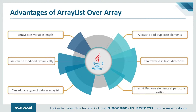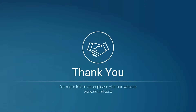Now let's jump into the last topic: advantages of ArrayList over arrays. First, ArrayList is variable length — arrays are fixed length. You cannot change the size of an array once created, but ArrayList can grow and shrink dynamically. Next, the size of ArrayList can be modified dynamically when you add elements, the size increases, and when you remove elements, it automatically decreases. You can add any type of data — list, union, structure, etc. — and it also allows duplicate elements. Next, you can traverse an ArrayList in both directions using ListIterator, and it allows you to insert and remove elements at a particular position. I hope you understood the concept of ArrayList and the difference between array and ArrayList. That's all for the session. Thank you and have a nice day.